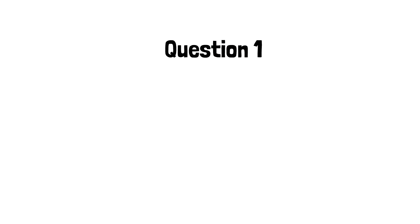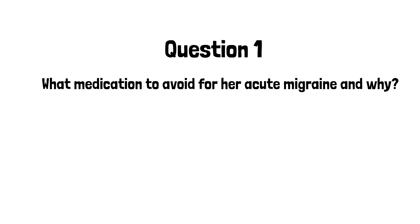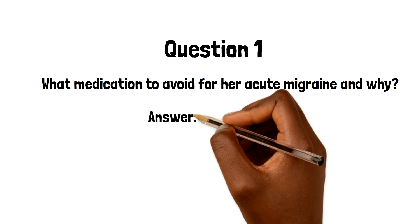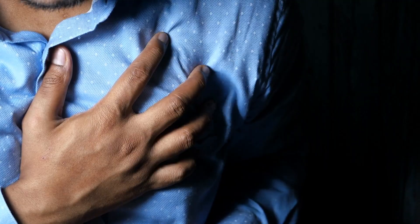Question one: what medication in the management of her acute migraine will we most need to avoid in this particular case, and why? The answer is triptans. There are two main contraindications here: firstly, the patient has a history of ischemic heart disease, and secondly, she has uncontrolled hypertension. These are two main contraindications for triptan medications. The patient does have a history of asthma, but she is already on a typical NSAID in the form of aspirin, which is not causing any issues. So when thinking about risk, the most significant concern in this case will be triptans.